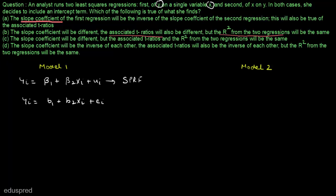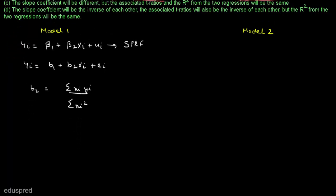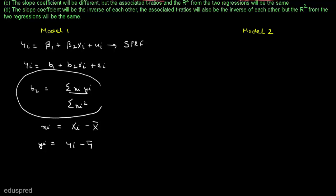Where b1 and b2 are estimators of β₁ and β₂, the population parameters. Now let's find the slope coefficient of the first regression. The slope coefficient using OLS is equal to summation(xi·yi) divided by summation(xi²), where small xi = Xi − X̄ and small yi = Yi − Ȳ. With these notations, this is the formula to calculate the slope coefficient b2.